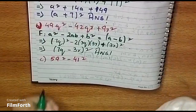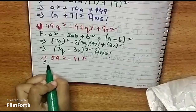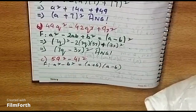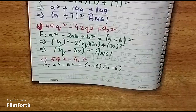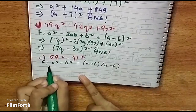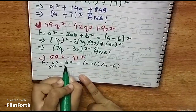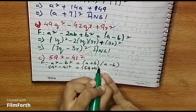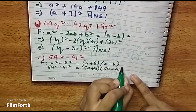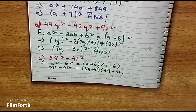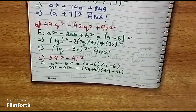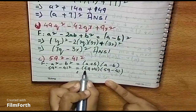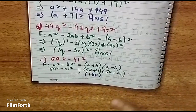For the third identity, a² - b² equals (a + b)(a - b). For example, 59² - 41² equals (59 + 41)(59 - 41), which equals 100 × 18, giving us 1800.